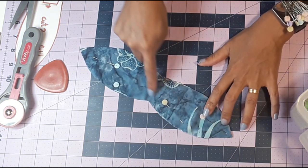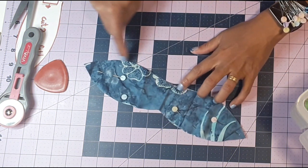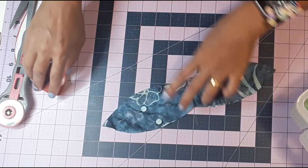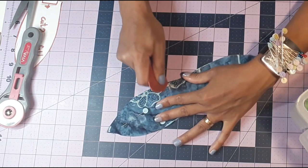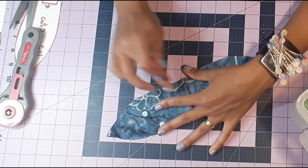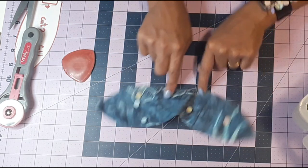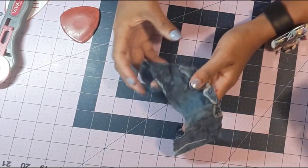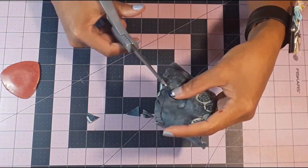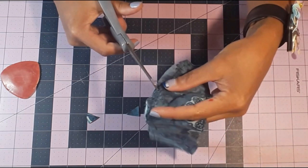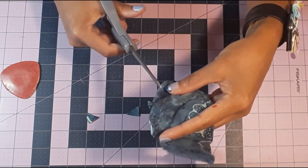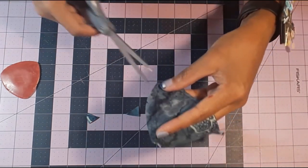I'm marking my gap that I'm going to leave open. It doesn't need to be too big, as long as you can turn it inside out. Snipping here is very important because it's going to make your curves very nice and sharp. Make sure you snip all around the curves and cut the corners as well.